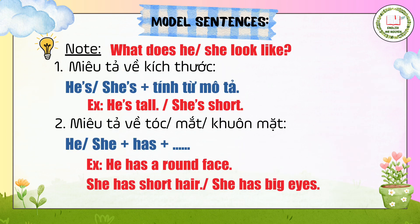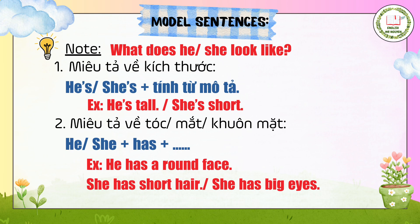In these sentence patterns, note that when describing someone's size, we use: He's or She's plus a descriptive adjective. For example: He's tall — he is tall. She's short — she is short. However, when describing hair, eyes, or face, we use: He or She plus has. For example: He has a round face. She has short hair. She has big eyes.